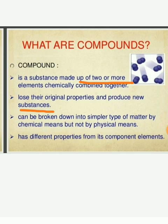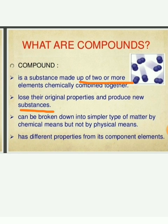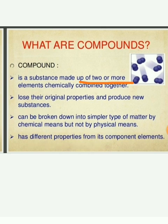Compounds lose their original properties and produce new substances. For example, water and sugar — sugar has some properties, water has some properties. If you mix water and sugar together, it makes sugar water. Two or more elements combined chemically to get a new product — we call that a compound. Compounds can be broken down into simpler matter by chemical means but not by physical means. Compounds have different properties from their component elements.